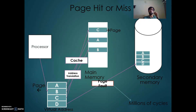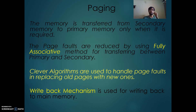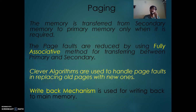The processor cannot directly access main memory; first it has to go through cache. Memory is transferred from secondary memory to primary memory only when it is required. Page faults are reduced by using the fully associative cache method. The main advantage of fully associative cache is that it reduces page faults, but the problem is that it takes a lot of time to compute exactly where the memory is present in primary memory. Clever algorithms are used to handle page faults by replacing old pages with new ones, and a write-back mechanism is used to write back to secondary memory.